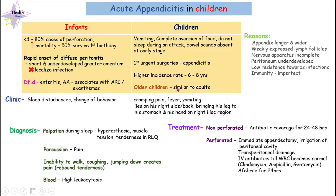In older children, signs and symptoms are similar to adults. The patient can have cramping pain in the stomach, fever, and vomiting. The child usually lies on their right side or back, bringing their legs to their stomach, and may keep their hand on the right iliac region to prevent examination.